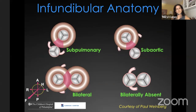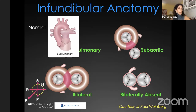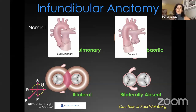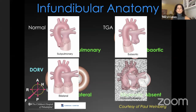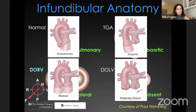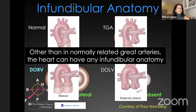There are four types of infundibular anatomy: sub-pulmonary infundibulum (seen in the normal heart and tetralogy of Fallot); sub-aortic infundibulum only (no infundibulum under the pulmonary valve — classically seen in transposition of the great arteries); bilateral infundibulum (muscle under both great arteries — classically seen in double outlet right ventricle); and bilaterally absent infundibulum, classically seen in double outlet left ventricle. It is important to understand that in transposition and double outlet right and left ventricle, you can have any infundibular anatomy, though the classic patterns I described are most common.